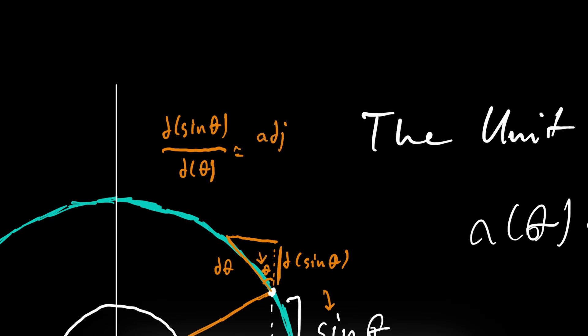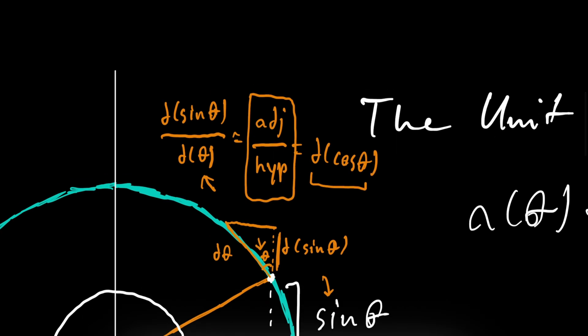And d theta looks a lot like the hypotenuse of this right angle triangle. Well, what ratio does this turn out to be? This turns out to be cosine of theta. d sine of theta over d theta would correspond to cosine of theta.